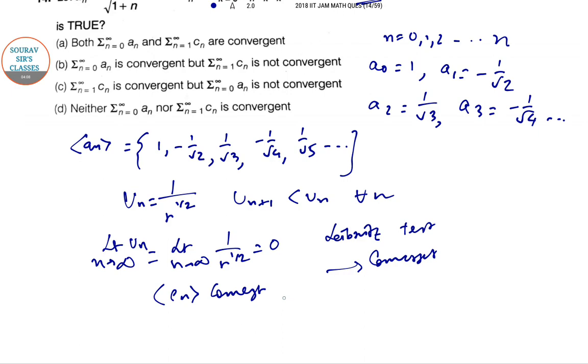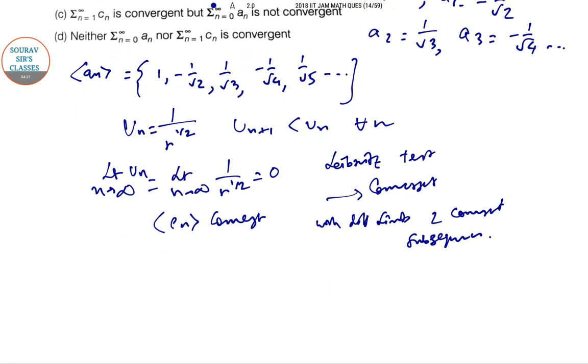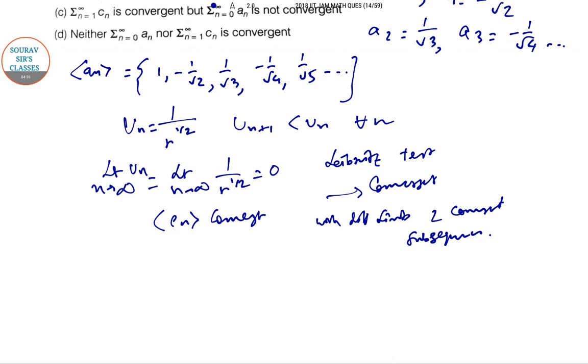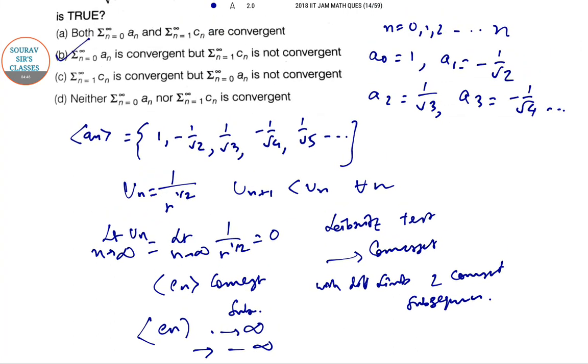Since it has two convergent subsequences with different limits, so with different limits, two convergent subsequences. Also c_n is divergent if it has a subsequence that tends to infinity and tends to or tends to minus infinity as well. So in these two cases combined for question 14, option B is our answer.